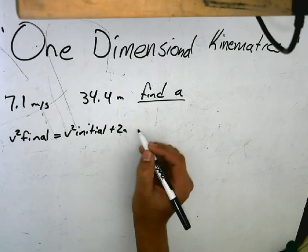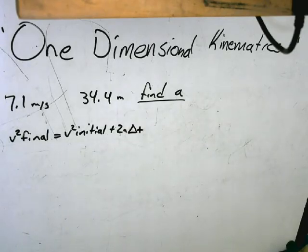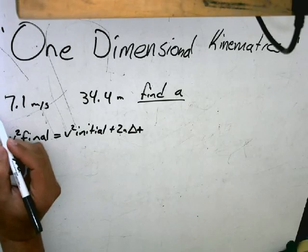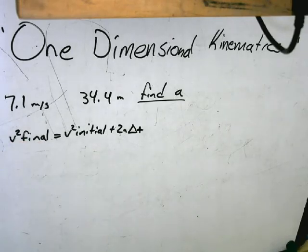This means that the final velocity squared will equal the initial velocity squared plus two times the acceleration times the distance times the time. Now we just have to substitute in our numbers: 50.41 equals...